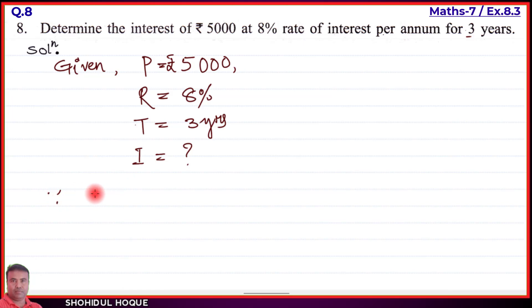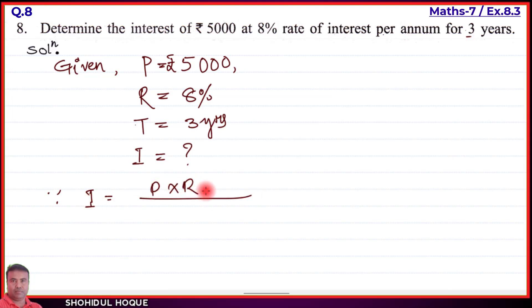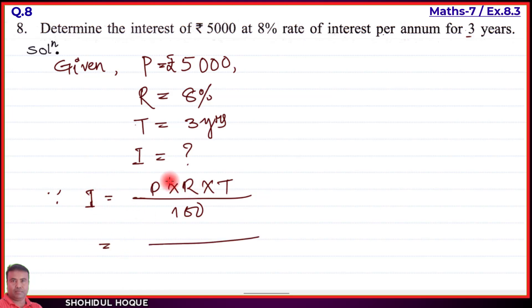The formula for simple interest is: I = (P × R × T) / 100. Using this formula, we will find the interest.